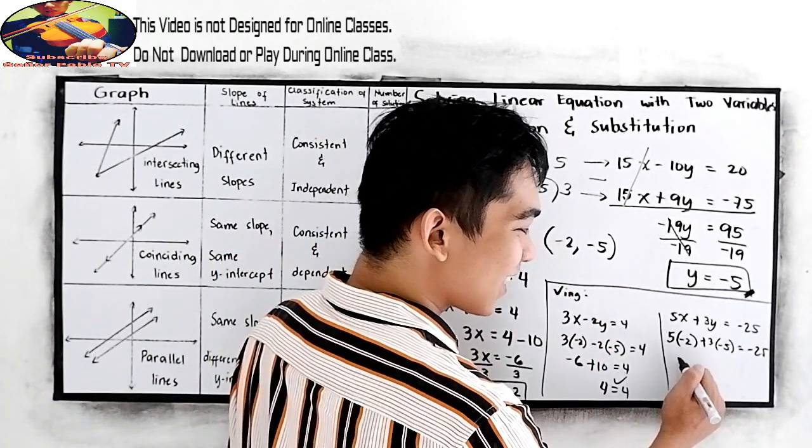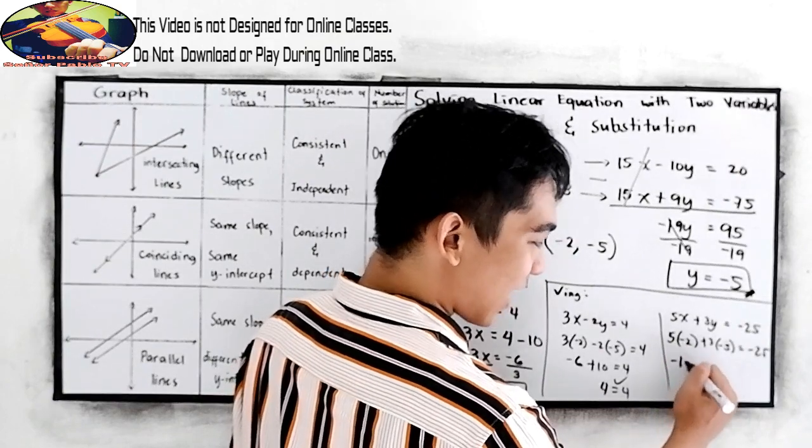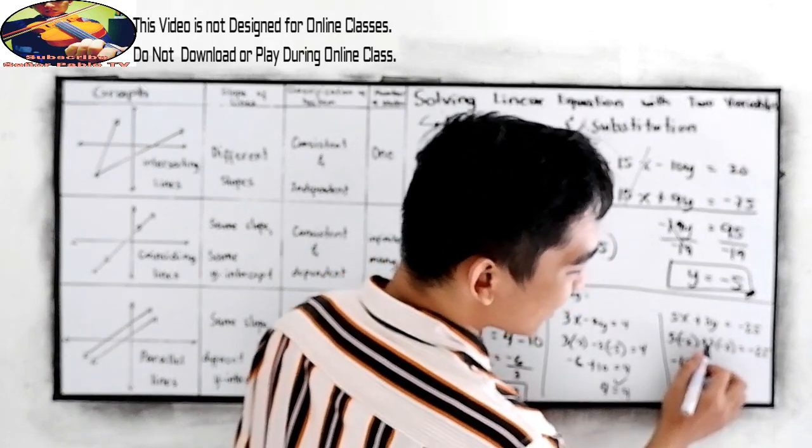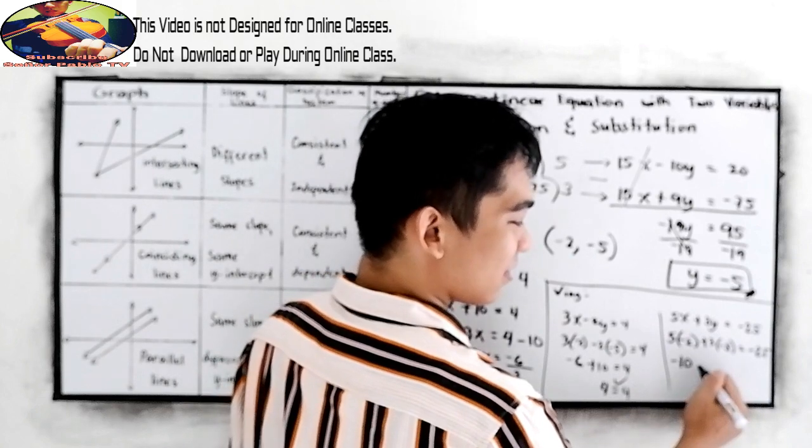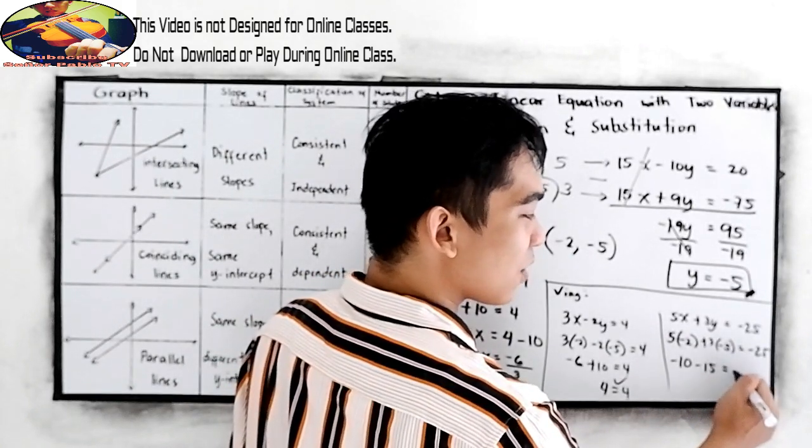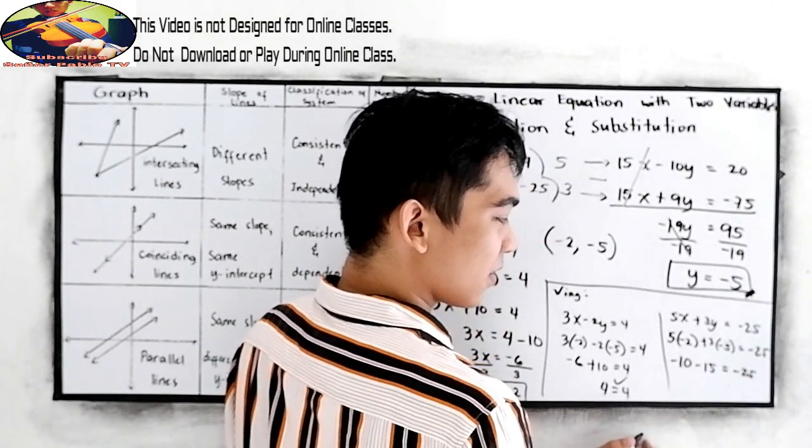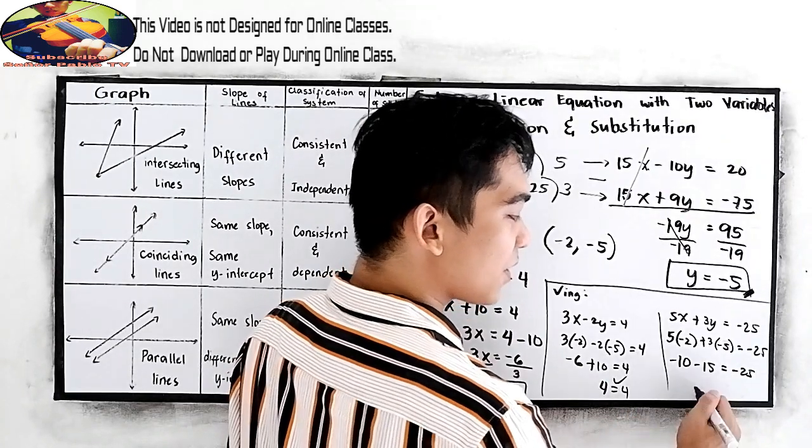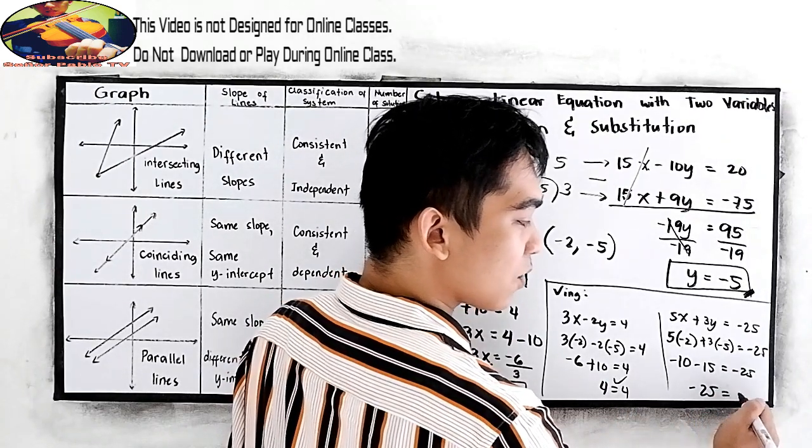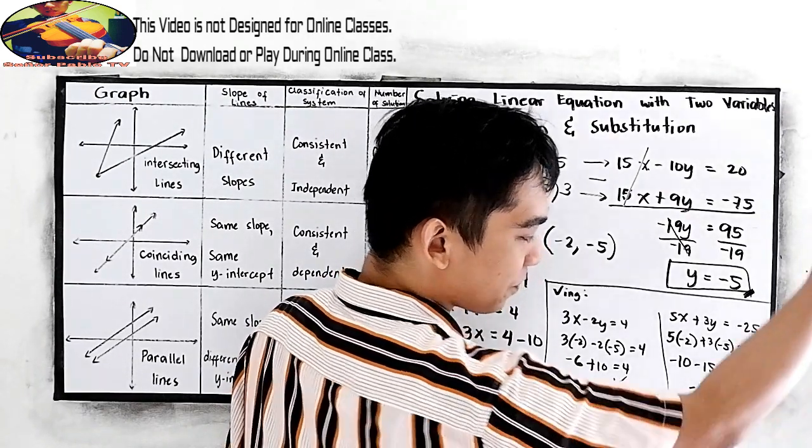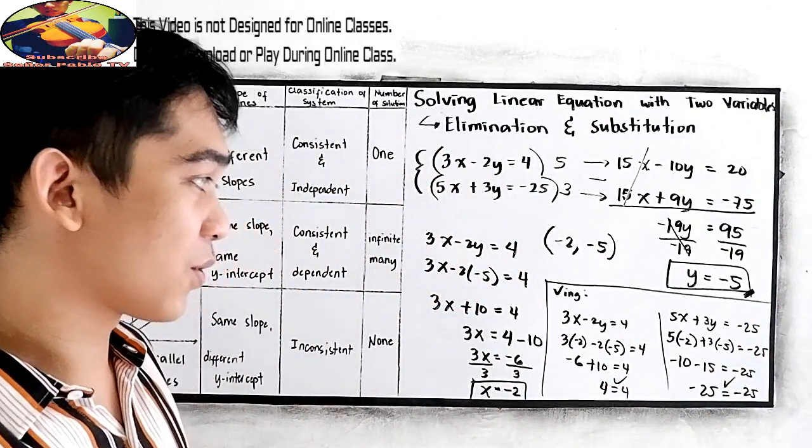So, 5 times negative 2, negative 10, 3 times negative 5, negative 15, is equal to negative 25. Negative 10 minus 15, negative 25, is equal to negative 25. Which is also true.